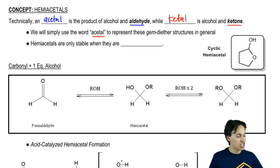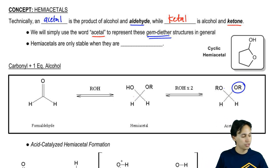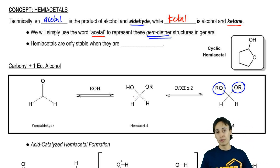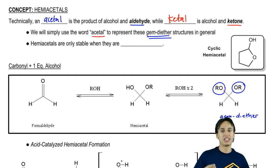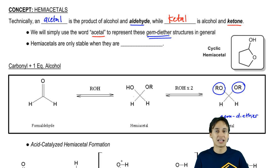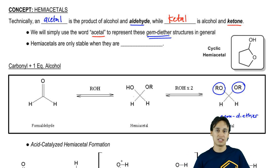Whenever you see one of these gem diether products — notice that the end product of an acetal reaction has two ether groups in a geminal position — we're not going to worry about the R group so much or whether it was originally an aldehyde or a ketone. I'm just going to call it an acetal, even though technically it might be a ketal, since it's really an industry standard thing where professors are not specific about the difference between an acetal and a ketal.